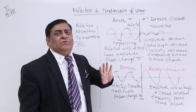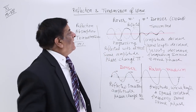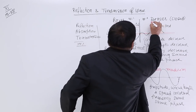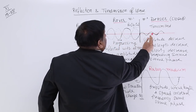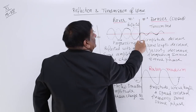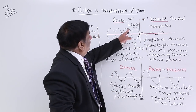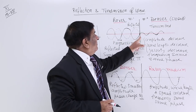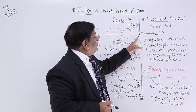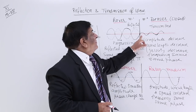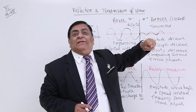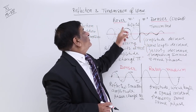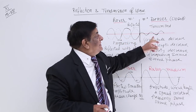Here we have two mediums — one is rarer and one is denser. The wave is travelling from rarer to denser, and this is the interface between the two. When this wave strikes it, there is a tug of war between the two. This wave wants to move away, but this is a denser medium — it cannot move the particles of the denser medium.